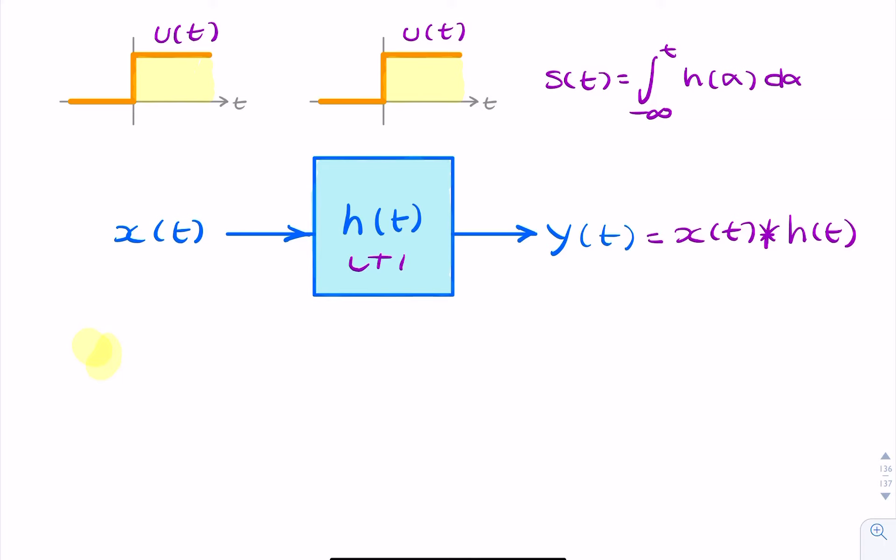So, Y of T equals, the definition of the convolution integral, it will be X of alpha multiplied by H of T minus alpha, d alpha.